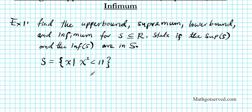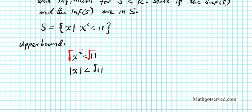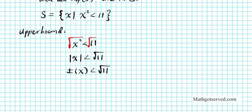We are going to find the upper bound of this set. To find the upper bound, we need to find all values of x that satisfy this inequality. So let's extract x² < 11 and solve it. Taking the square root of both sides, we get the absolute value of x is less than √11, which gives us the sandwich inequality: -√11 < x < √11.